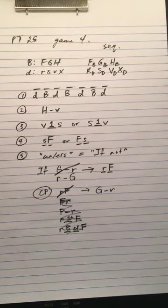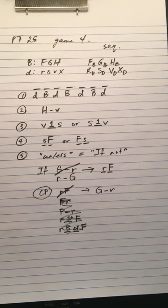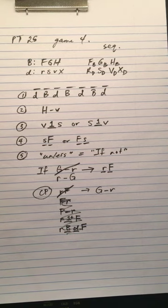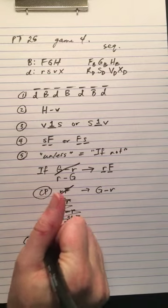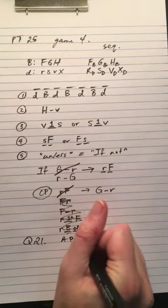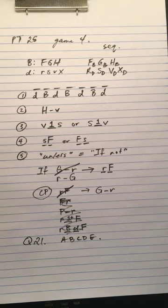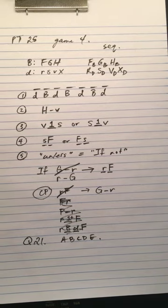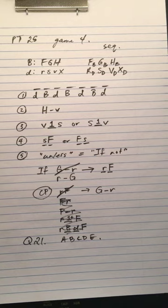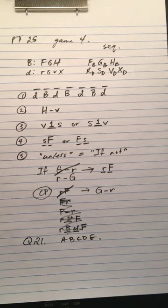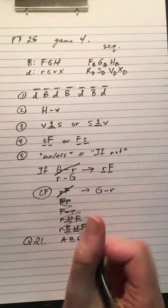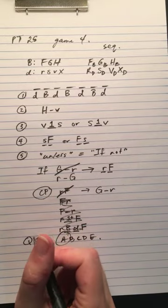For this one, I'm just going to go through one question. I'm actually going to do question 21. So which one of the following could be the fourth song in the sequence? So the fourth song has to be a ballad. Wow, that was a lot easier than I thought it was going to be. The fourth song has to be a ballad. The only ballad in this list is A, G. Let's do another question.